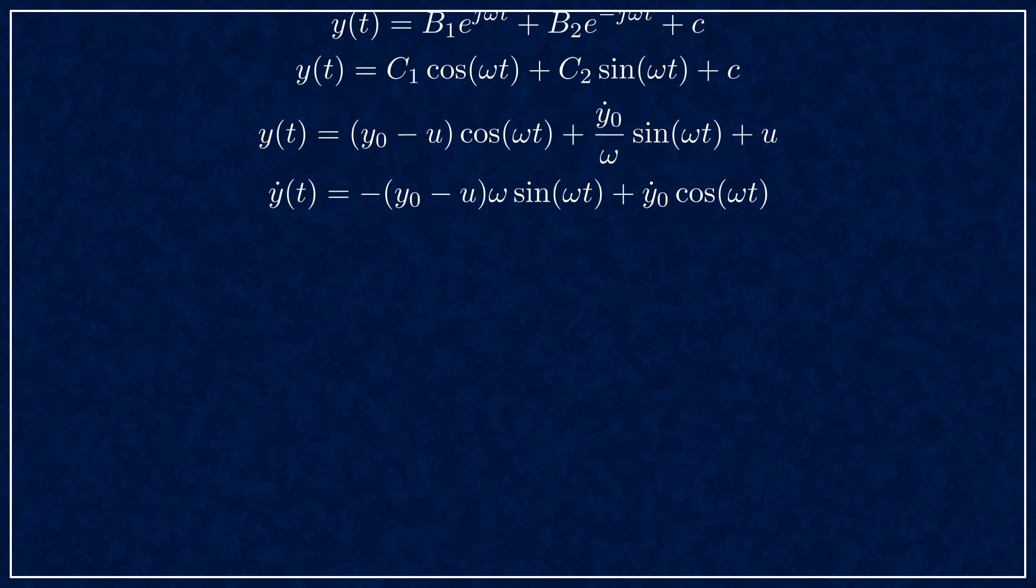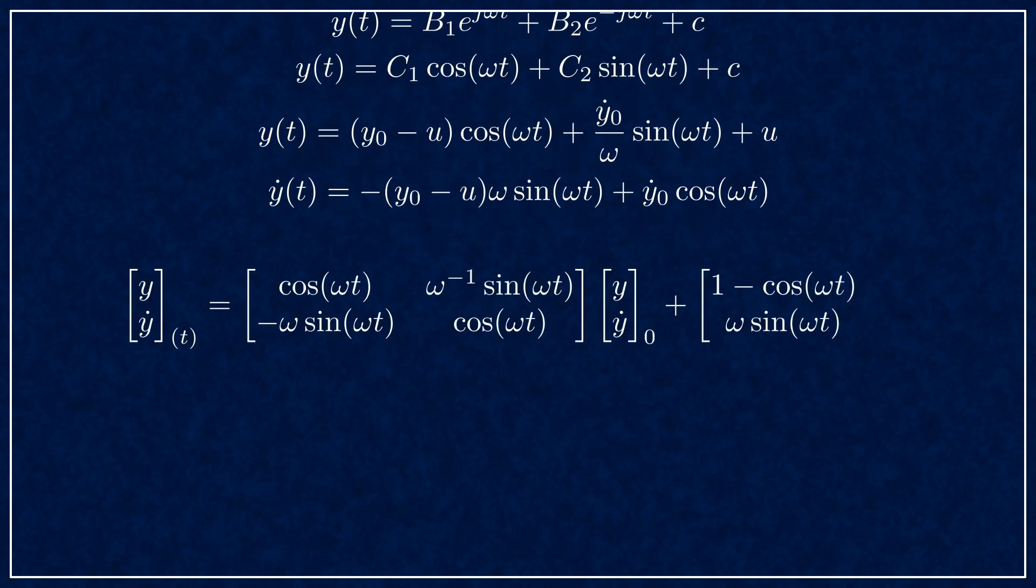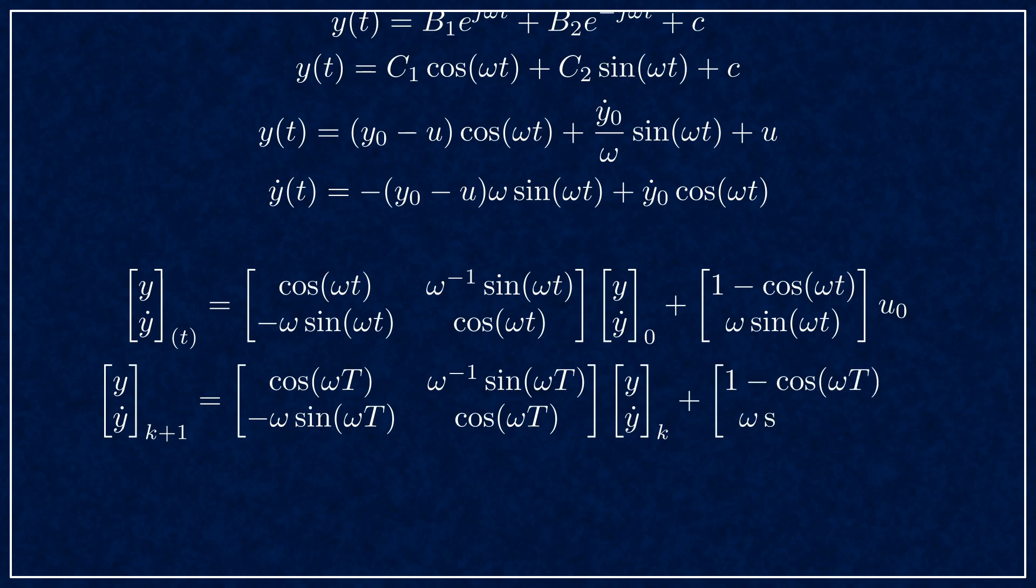Now you can put the solution into a matrix form like this. This will tell you the value of y and the derivative at time t. All you do next is plug in the sampling time, uppercase T. This tells you how to get from the initial condition to the next sample. And then you use the result from the previous sample as initial condition for the next transition.